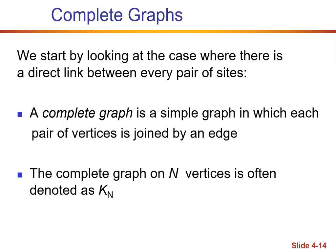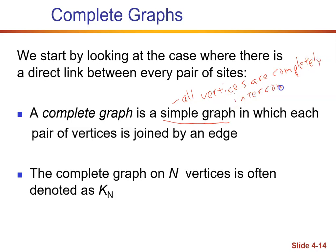A complete graph is a simple graph in which each pair of vertices is joined by an edge. What is a simple graph? All vertices are completely interconnected, and there are no loops or multiple edges. That is what a simple graph means.